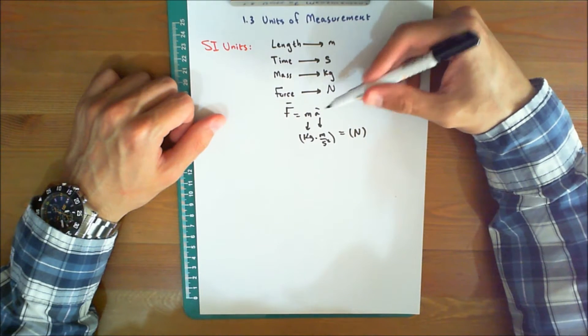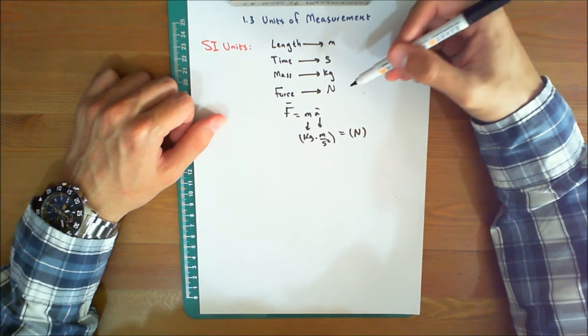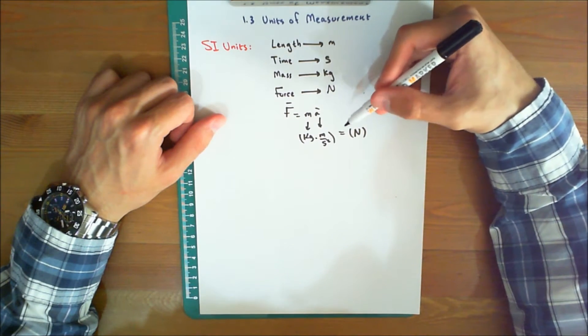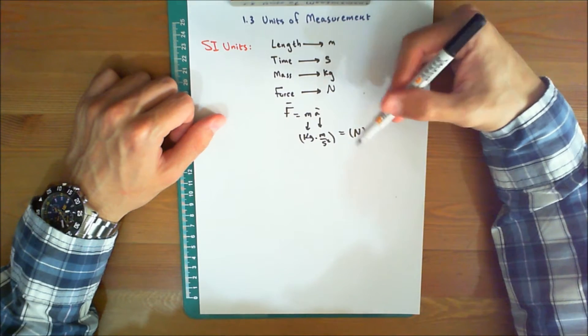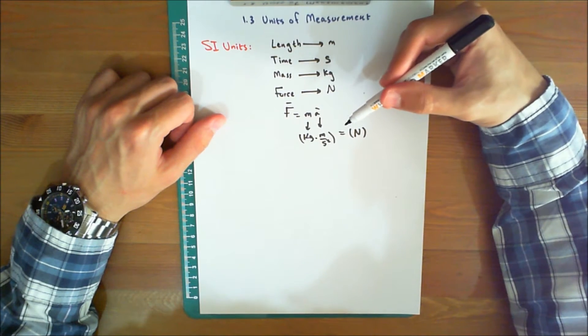is derived from F equals mA. Thus, one newton is equal to a force required to give one kilogram of mass an acceleration of one meter per second squared.